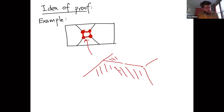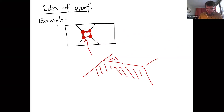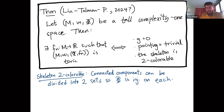We can go even further than this toric lifting theorem — this is the big theorem in toric lifting for arbitrary dimension, but maybe instead of a toric lift we can consider other types of integrable system lifts.